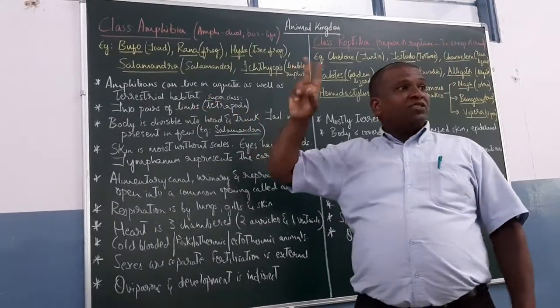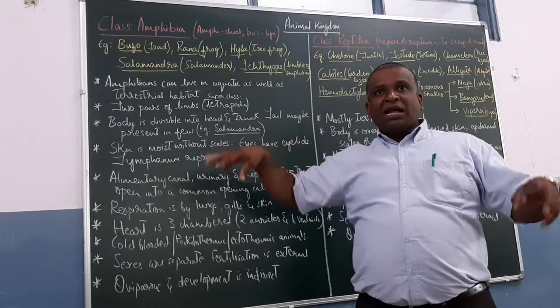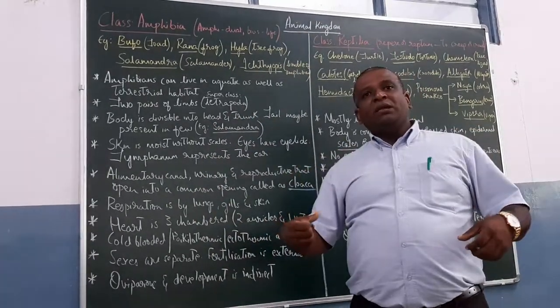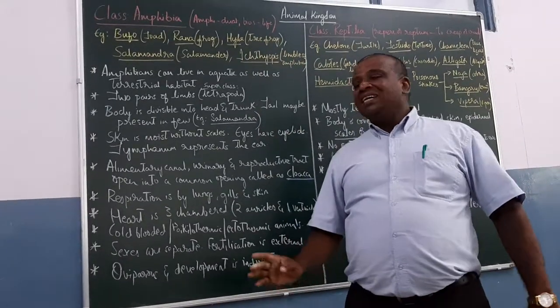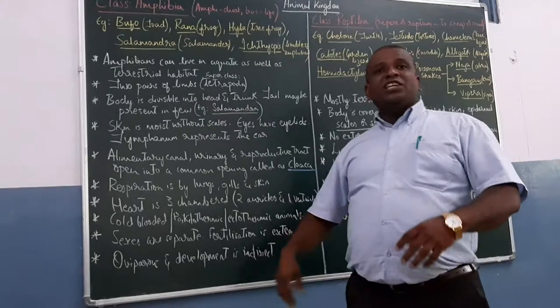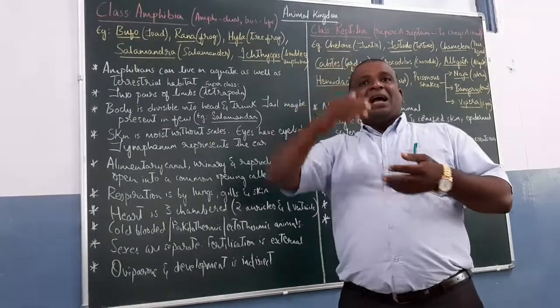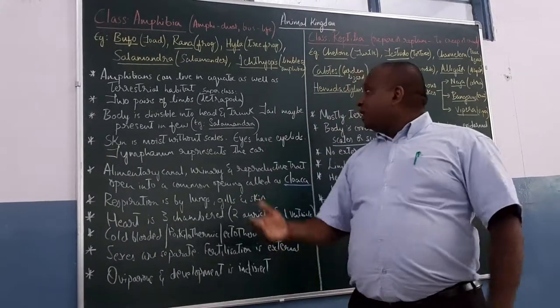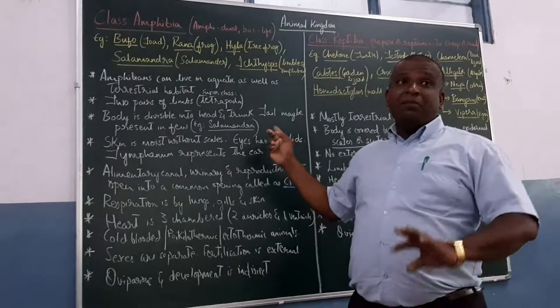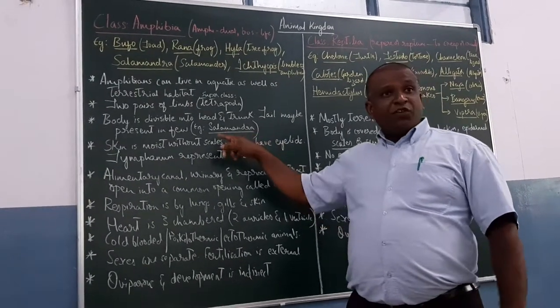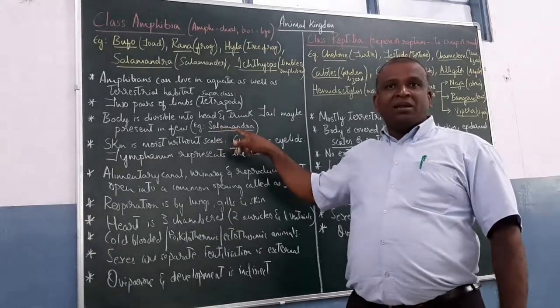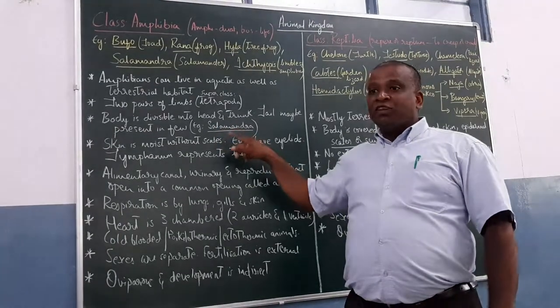So they have two pairs of limbs. Because they are under the superclass tetrapoda. A pair of forelimbs, a pair of hind limbs. Body is divisible into head and trunk region. And you also should remember tail may be present or might be absent. Present in few examples, I have given it as salamandra, the tailed amphibians.